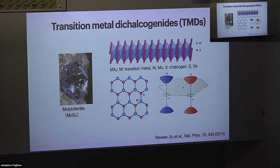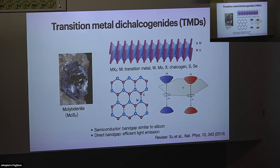Because of the broken symmetry between the two sublattices, the material is a semiconductor. It opens up a band gap at the corners of the Brillouin zone at the K and minus-K points. In the monolayer limit, this corresponds to a direct band gap, so the material can emit light quite efficiently. You can also tune the band gap size by changing the composition, tuning it between one to two electron volts — which is very useful for visible optoelectronics applications.